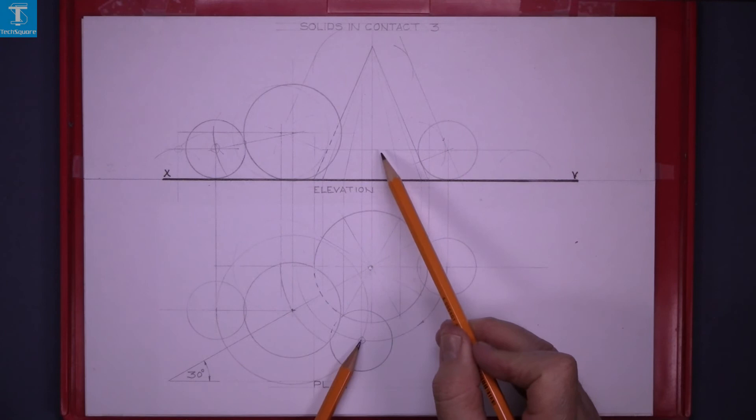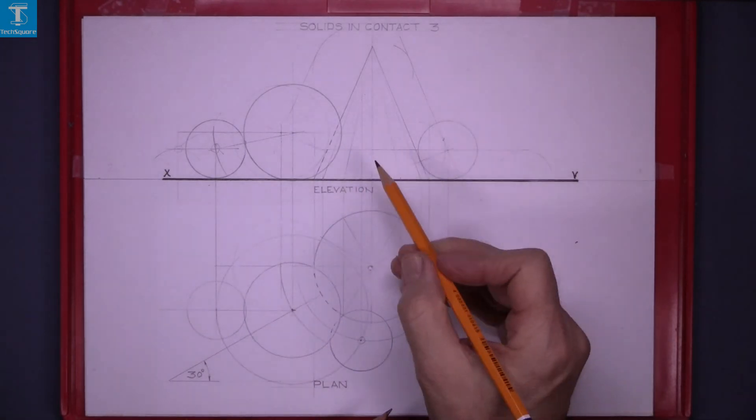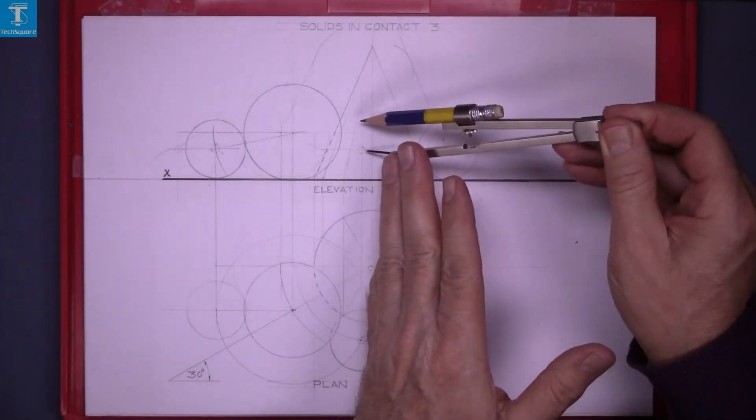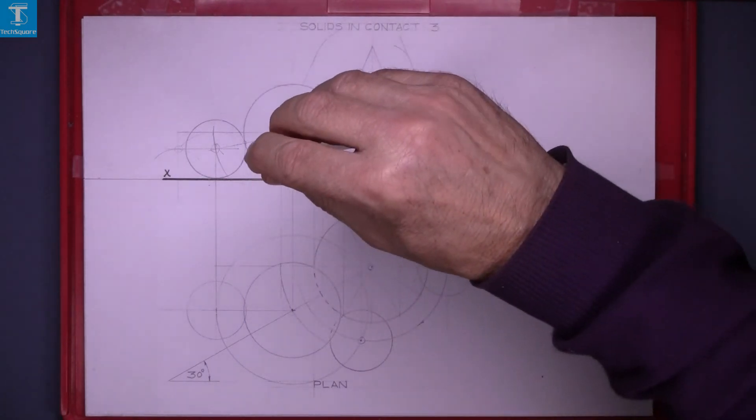So, bring it horizontally across where those two lines meet, that gets the centre and draw in the small sphere.